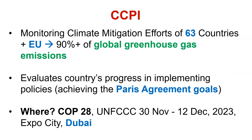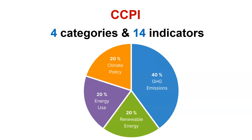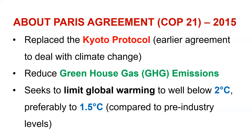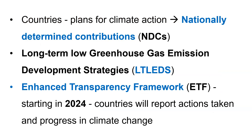As a consolidated summary: CCPI — Climate Change Performance Index — places India at rank number 7. This report was released at COP28, which happened in Dubai. There are four categories and 14 indicators, with 40% weightage given to greenhouse gas emissions. India's score is 70.25. The highest-ranking country is Denmark, but the first three places are kept empty. The Paris Agreement came in 2015 as a replacement for the Kyoto Protocol, relating to limiting greenhouse gas emissions below 2 degrees Celsius and preferably 1.5 degrees Celsius. Key terms: NDC, LTLETS, and ETF.